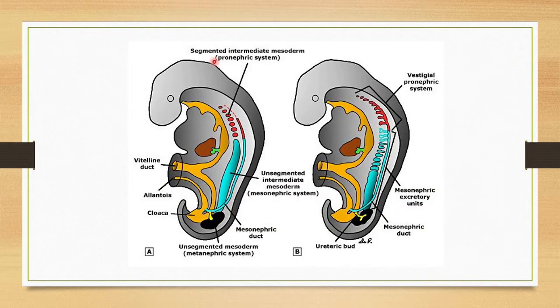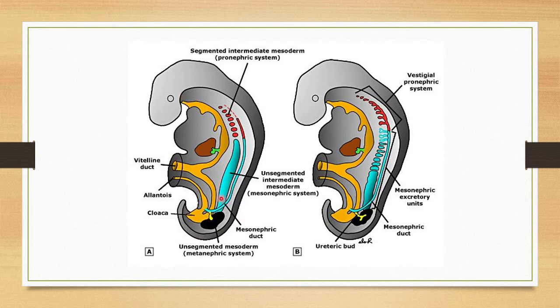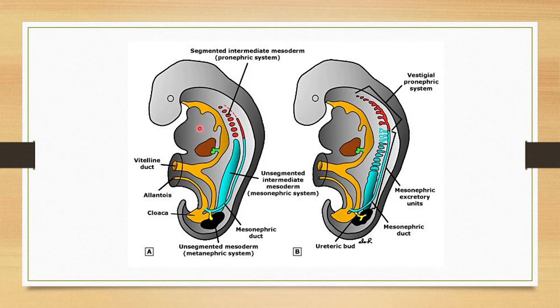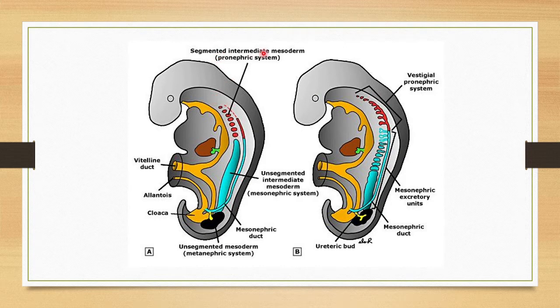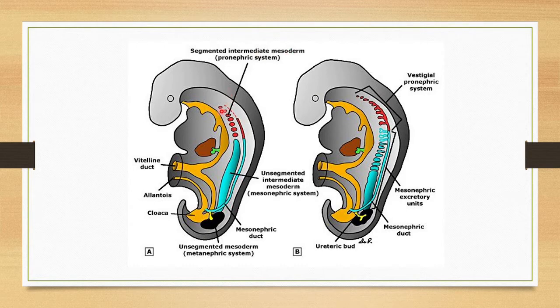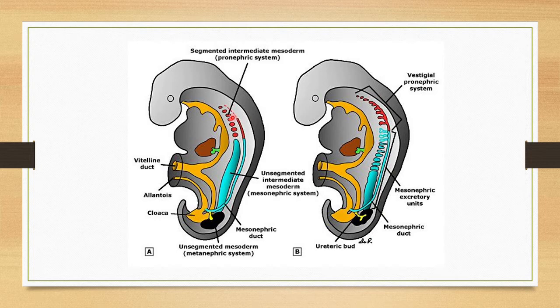This is the developing embryo. You can see the cephalic region, head region, and middle portion. This is the mesoderm, elongated. This anterior part is the segmented intermediate mesoderm. Here the mesoderm is segmented, so in this region, pronephric kidney develops.